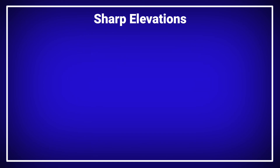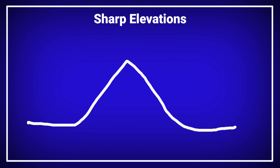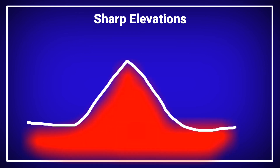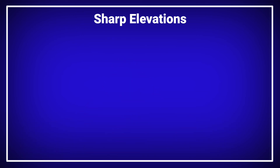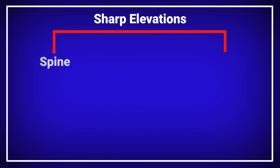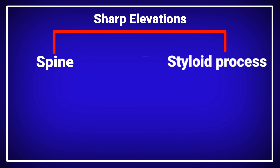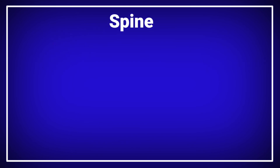Those were all the examples of the rounded elevation. Now we will discuss the sharp elevation. In the sharp elevation, the elevated structure is a thin and pointed part. There are two types of structures for the sharp elevations: the spine and the styloid process. These two types represent the sharp elevation on different parts of the body.